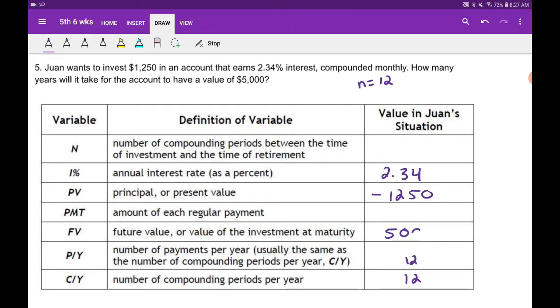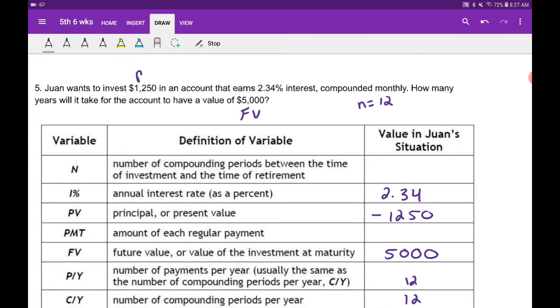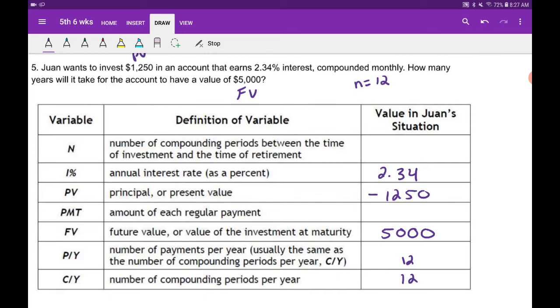So that's going to be our future value right here. Future value, principal. Again, the $1,250 is coming out of our pocket, so we need to put that in as a negative.